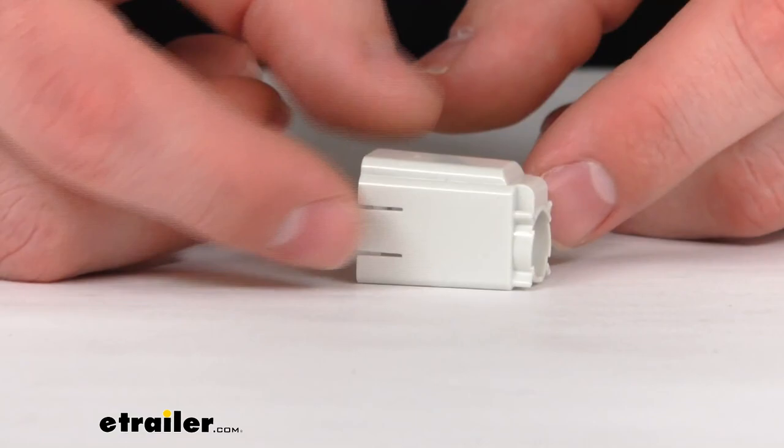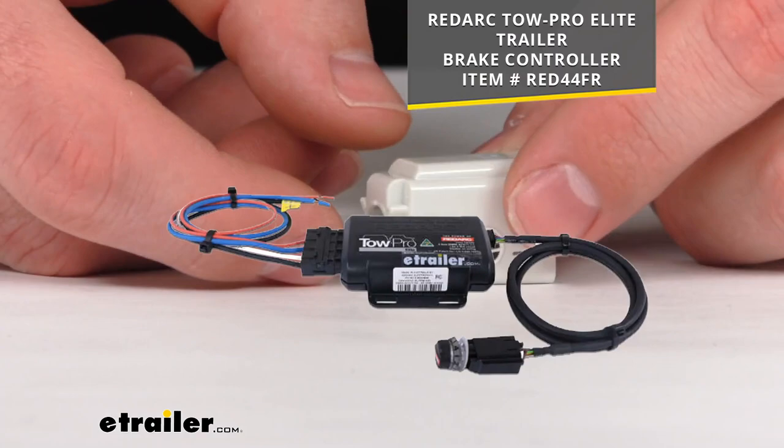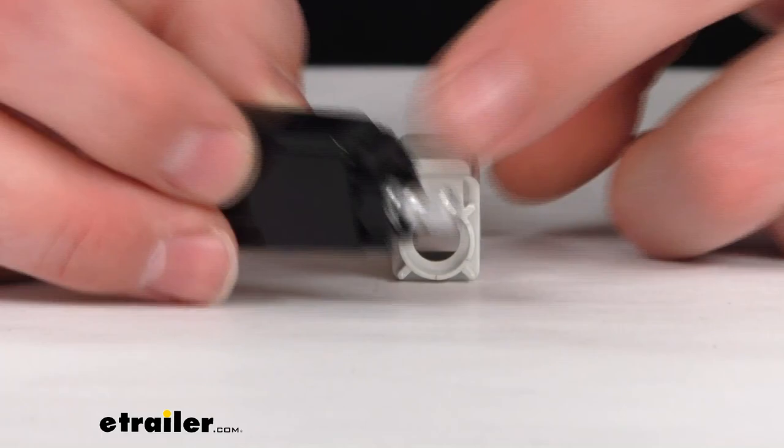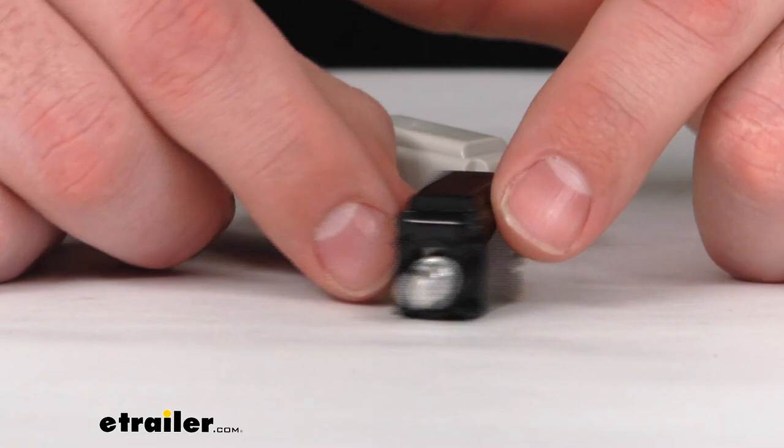This is going to replace the mounting panel that originally came with your TowPro Elite electric brake controller. This will allow you to install the brake controller's control knob in your dash or console. I do have an example of the mounting panel that comes with your TowPro Elite.